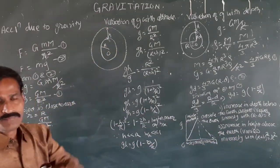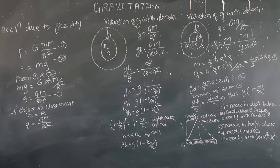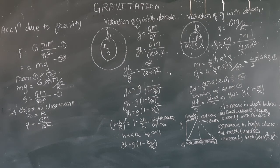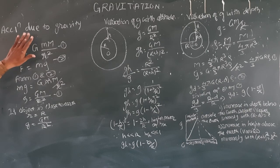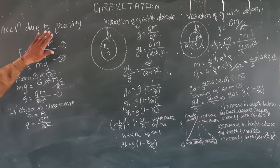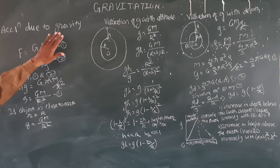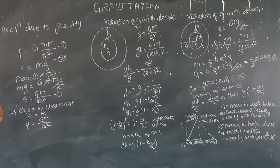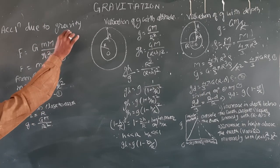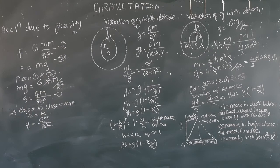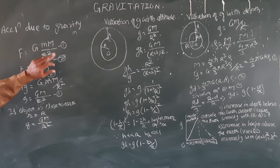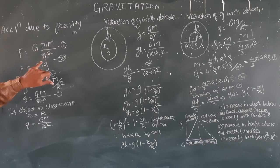Gravitation. Acceleration due to gravity is the expression. It is the magnitude of gravitational force acting on a point object of mass m, due to another point object of mass M, separated by a distance R.